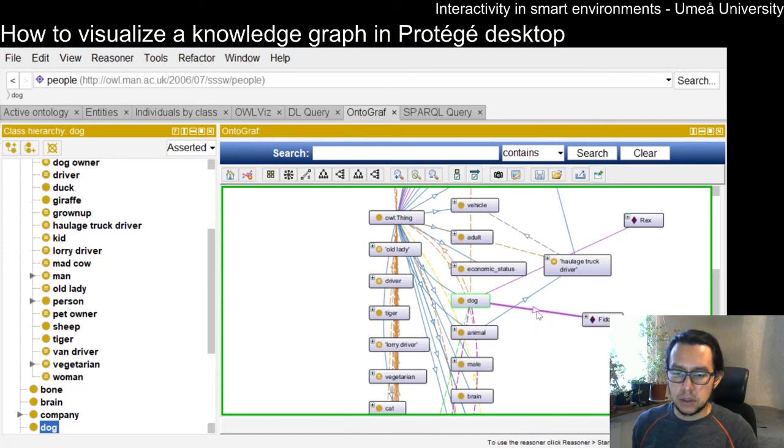Also, it displays the semantic relationships. That's all. There are two ways. There are other plugins in Protégé. So you can go to the Protégé webpage and download and install them. Thank you.